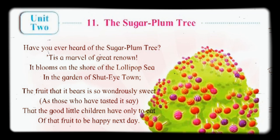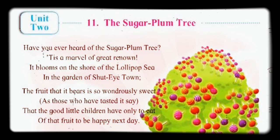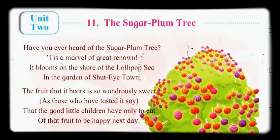Let's recite it again. Poem number 11 — The Sugar Plum Tree. Have you ever heard of the sugar plum tree? It is a marvel of great renown. It blooms on the shore of the lollipop sea, in the garden of Shut-Eye Town.